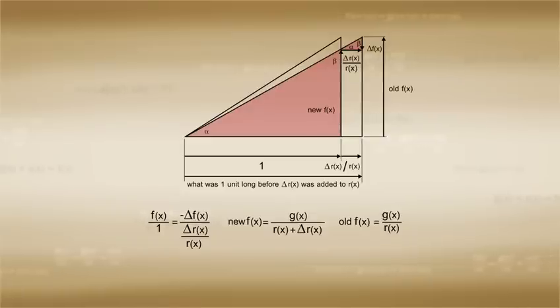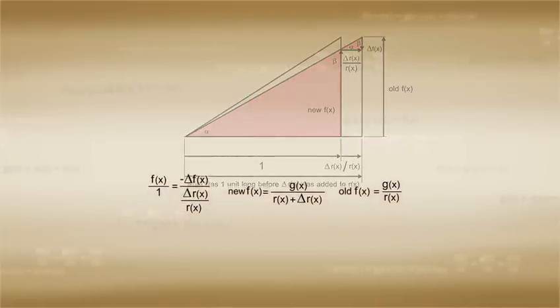Now that we defined the new f in terms of g and r functions, we can say that negative delta f over delta r is equal to g over r plus delta r. And therefore, we can say that delta f is equal to negative g times delta r over r times r plus delta r.